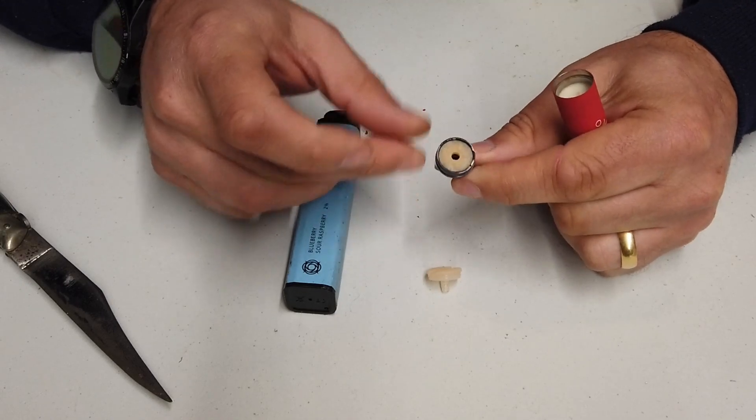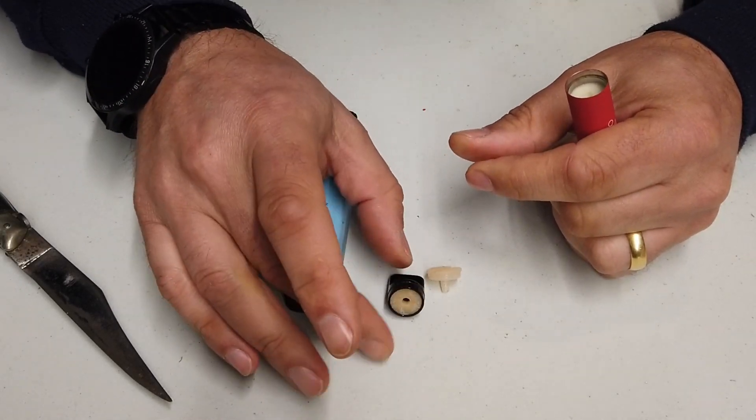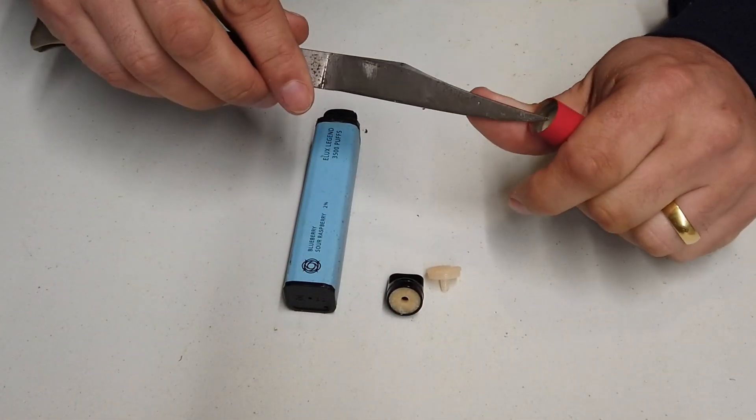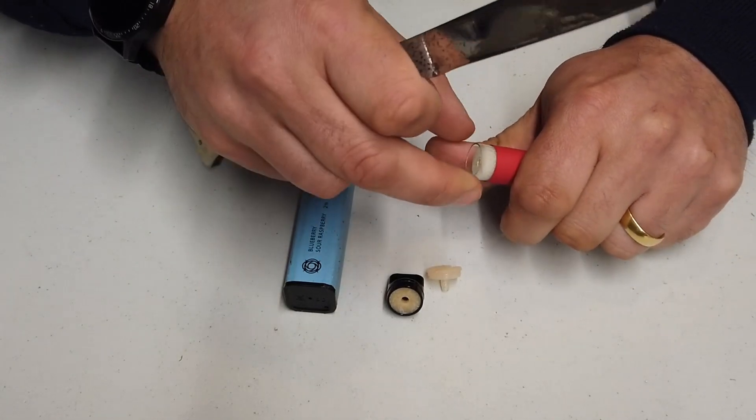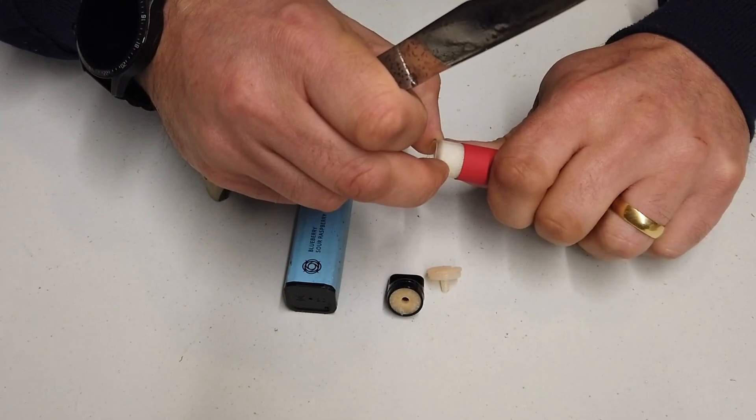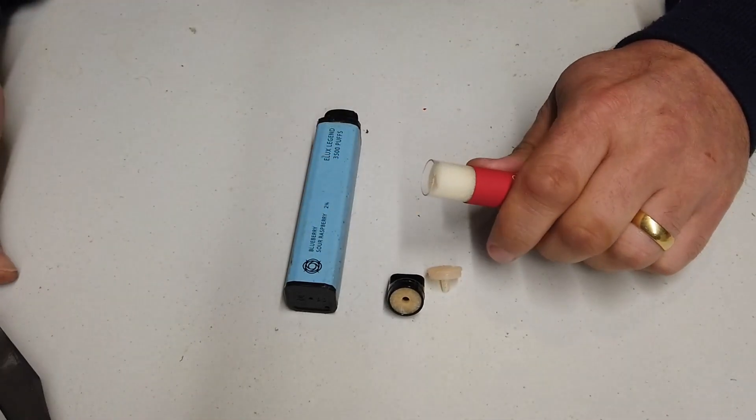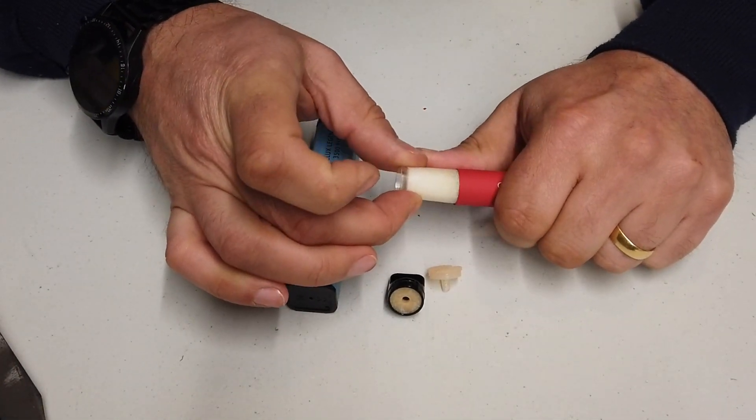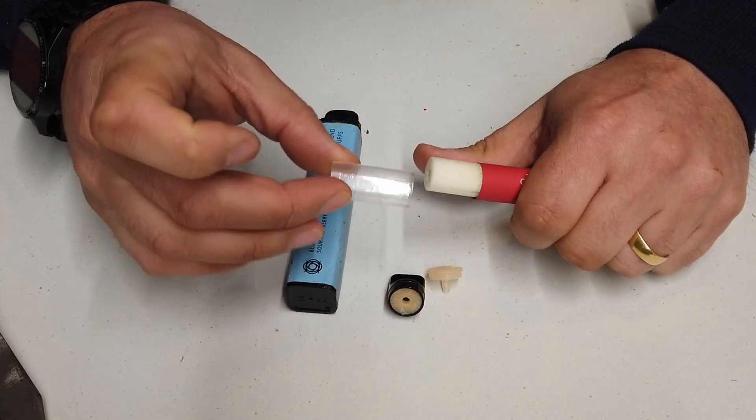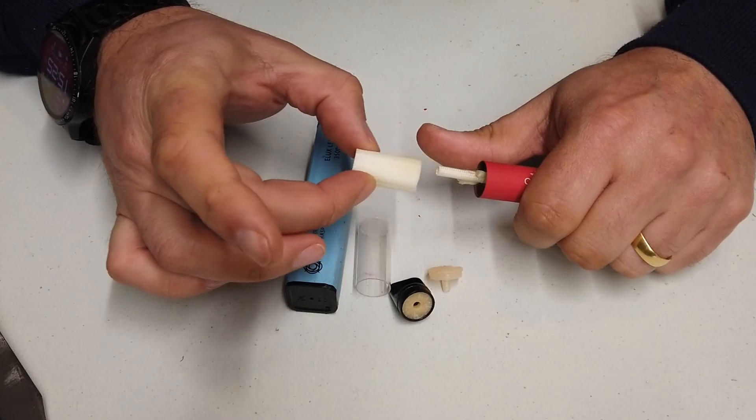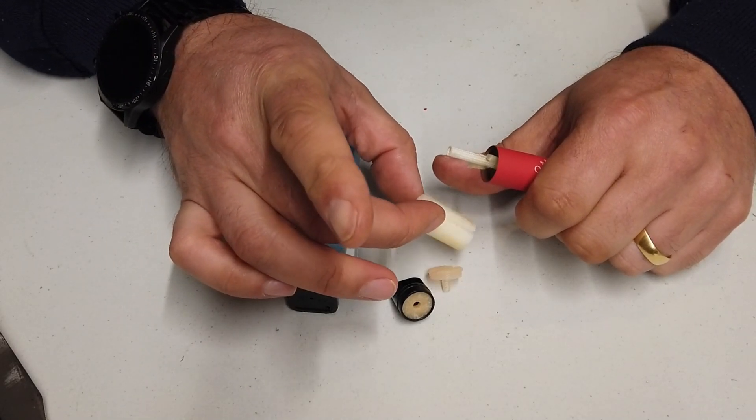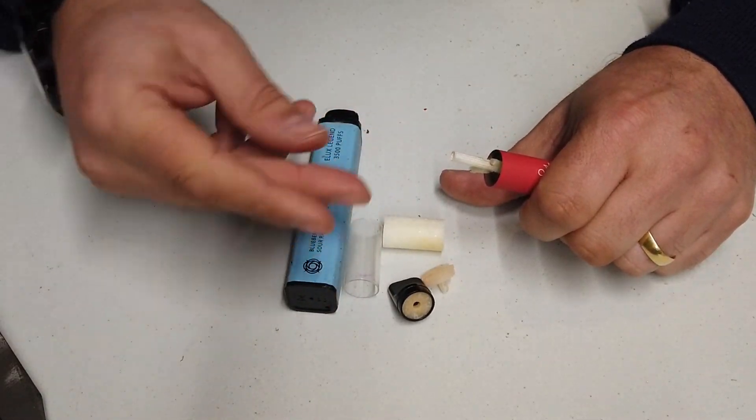And then here we have a plastic container. I would guess that probably contains some kind of cotton which has got all of the vape juices soaked into it. Then a little bit more tugging and pulling.